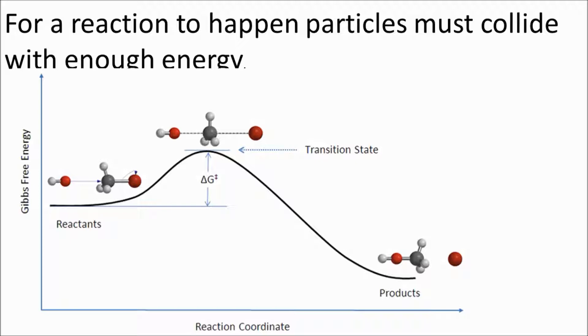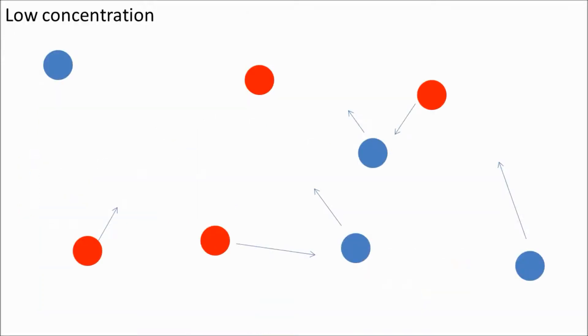The more successful collisions per second, the more successful collisions that you have per second, the faster the reaction is going to be. So, how do we get more collisions per second? Well, firstly, concentration.